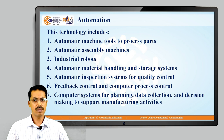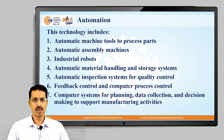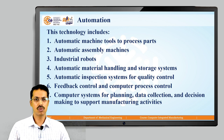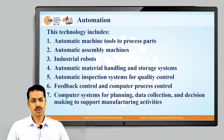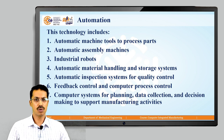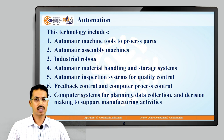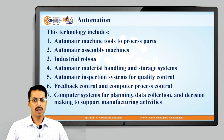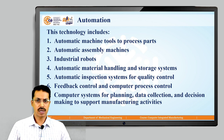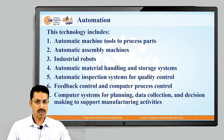Next is automatic inspection systems for quality control. There are two types: ongoing inspection during manufacturing and inspection at the end. We can use robots or automation for inspection purposes. Then there is feedback control and computer process control, and lastly, computer systems for planning, data collection, and decision making. Data generated during manufacturing is collected automatically and used to take corrective actions that support manufacturing activities.